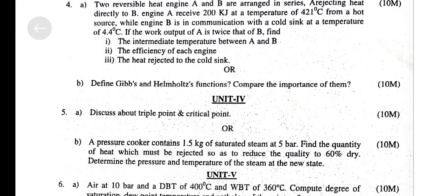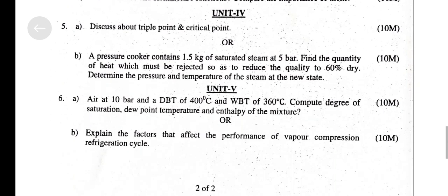Compare the Gibbs and Helmholtz functions and discuss the importance of each. Discuss the triple point and critical point. A pressure cooker contains 1.5 kg of saturated steam at 5 bar. Find the quantity of heat which must be rejected so as to reduce the quality to 60% dry. Determine the pressure and temperature of the steam at the new state.